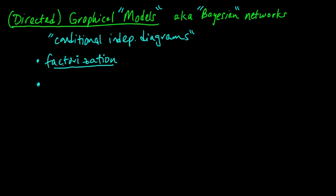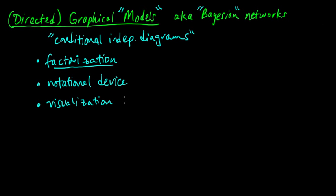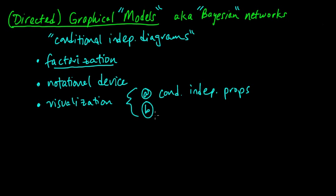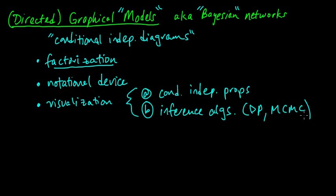So why are they called Graphical Models? Where does the 'Graph' part come from? They are a notational device. The graph part is a notational device that's extraordinarily useful for visualizing two closely related things: the conditional independence properties of a probability distribution, and inference algorithms for a particular model — things like dynamic programming and Markov chain Monte Carlo.